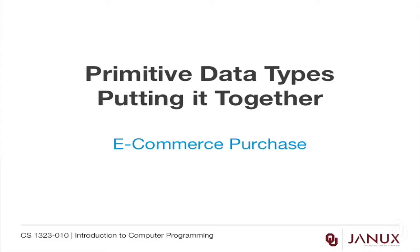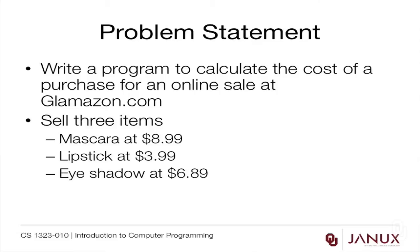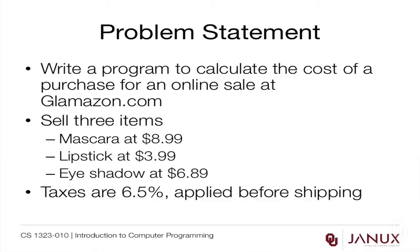We're going to finish our study of primitive data types with an e-commerce purchase. Let's write a program to calculate the cost of a purchase for an online sale at Glamazon.com. They're going to sell three items: mascara at $8.99, lipstick at $3.99, and eyeshadow at $6.89. Taxes are 6.5% and they're applied before shipping, and shipping costs $8.00.